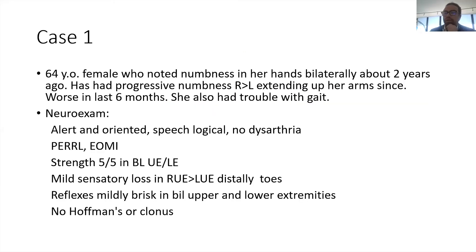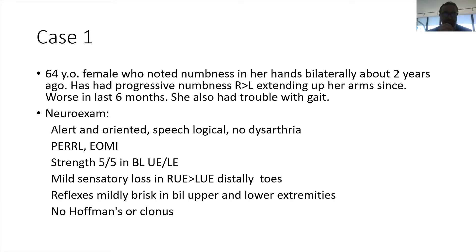Starting with the first case to show various pathologies: this is a 64-year-old female who noted numbness in her hands about two years ago. She had progressive numbness in the right upper more than the left upper extremities, and over the past six months she has been noticing worsening associated with gait imbalance. On exam, her strength is normal in the uppers and lowers, she had some sensory deficits more in the uppers than the lowers, and brisk reflexes.